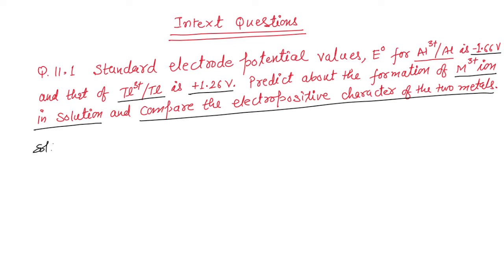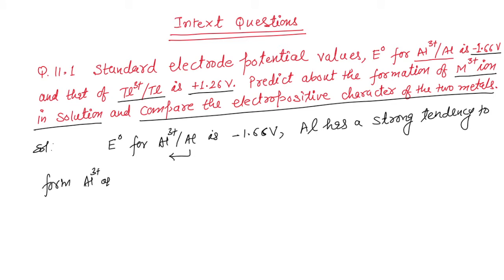Let us discuss. As E° value for aluminium 3 plus to aluminium is minus 1.66 volt, that means aluminium has a strong tendency to form aluminium 3 plus because when we go to this side aluminium to aluminium 3 plus it becomes plus 1.66 volt. That means aluminium has a strong tendency to form aluminium 3 plus ion.